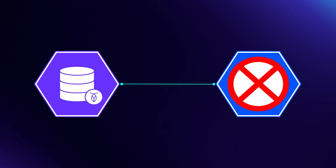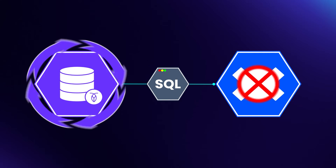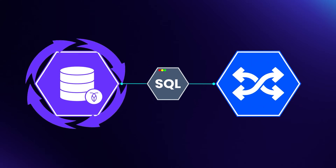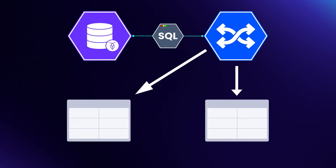In some cases, CockroachDB can handle the retry automatically. Specifically, if an operation is executed as a single SQL statement, then CockroachDB will use an implicit transaction. These implicit transactions can be automatically retried. Furthermore, transactions that are implemented as a batch, where each statement doesn't rely on the results of the previous one, can also be retried.